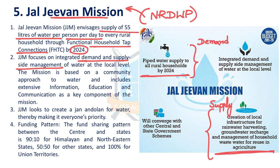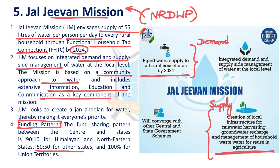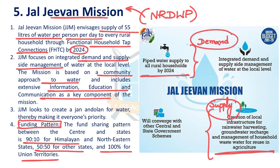Jal Jeevan Mission is based on a community approach to water and encourages extensive IEC — Information, Education and Communication — to create awareness. The funding pattern includes 50-50 for normal states, 90-10 for special category states, and 100% central funding for union territories. It converges with various central and state government schemes and integrates demand and supply side water management at the local level.